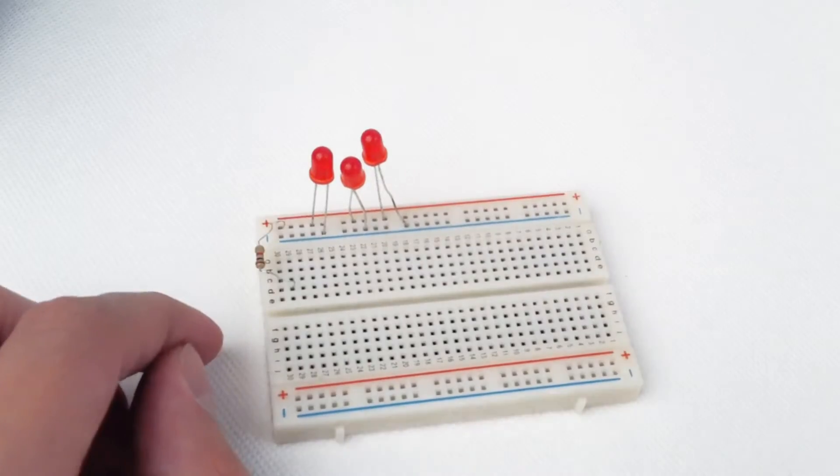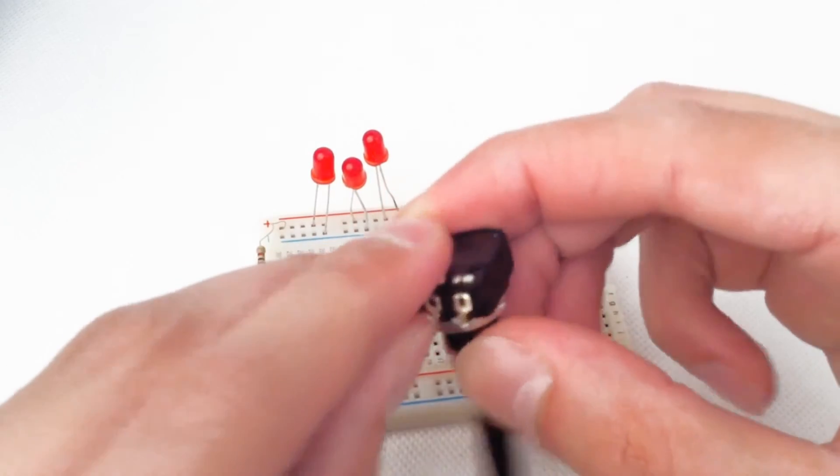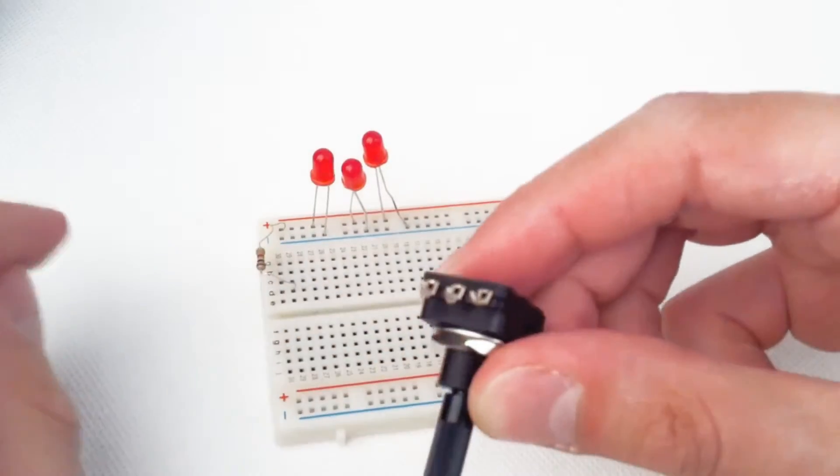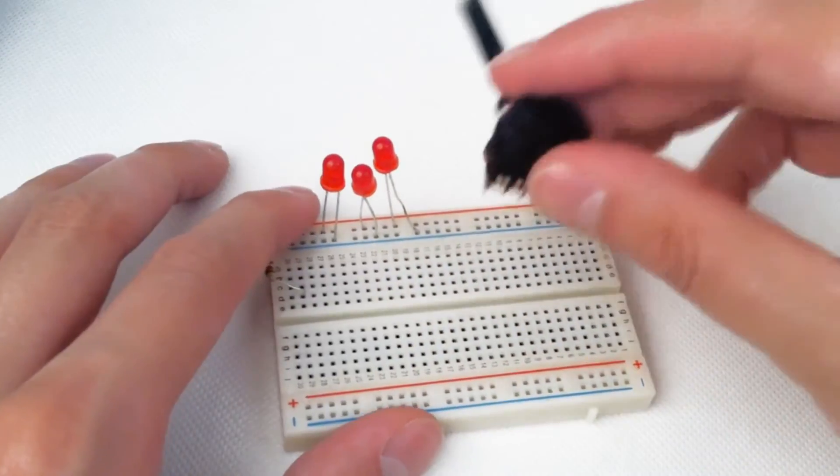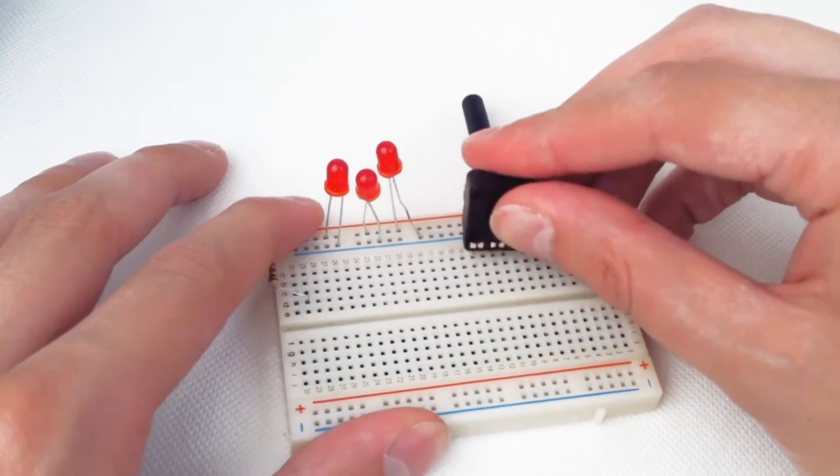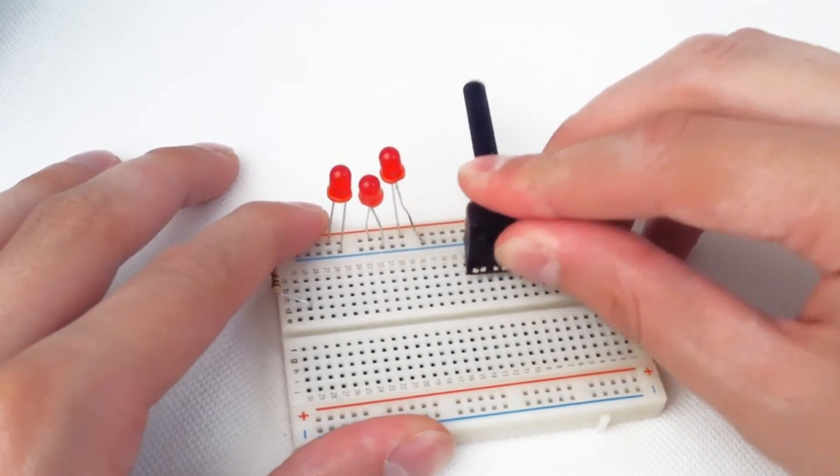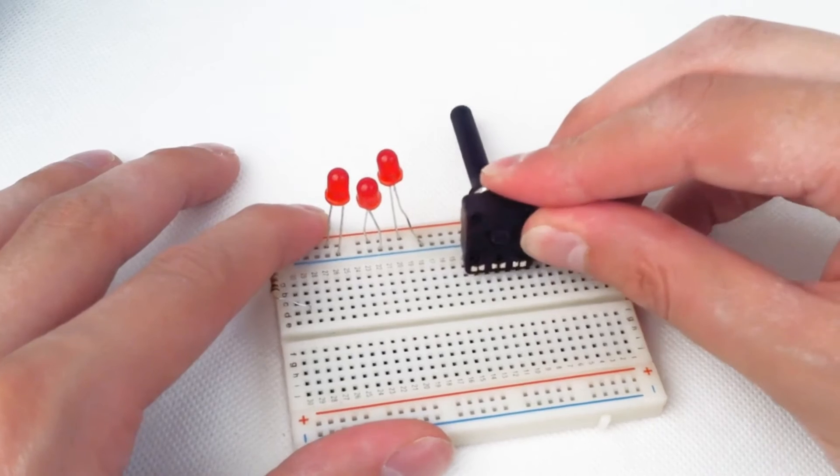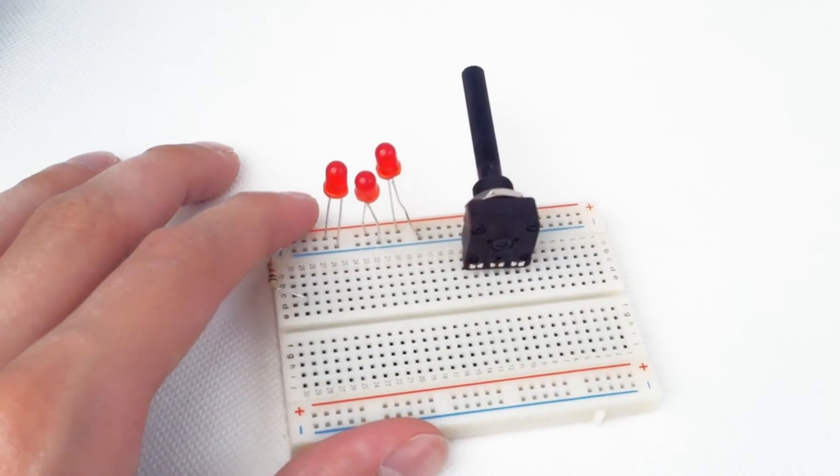Now we are going to have our potentiometer. You can see it has these 3 terminals. Just make sure they are nice and flat and slot it in like this. Make sure the terminals go into the holes nicely so it's electrically connected.